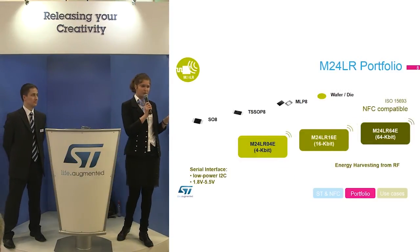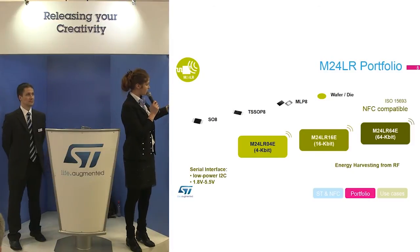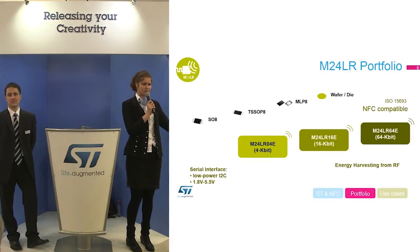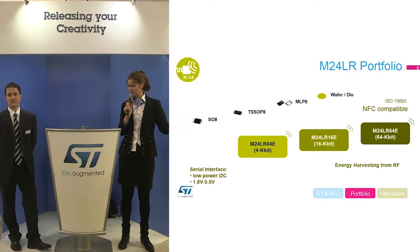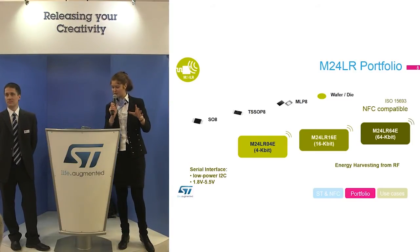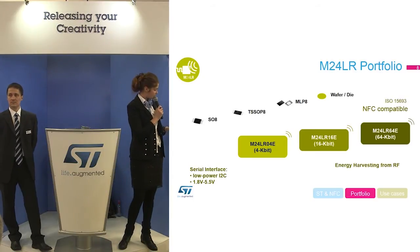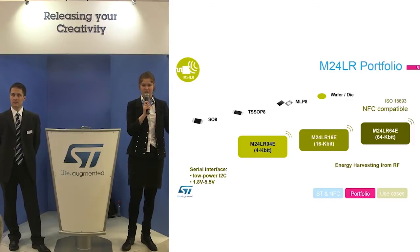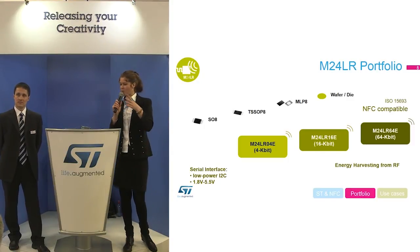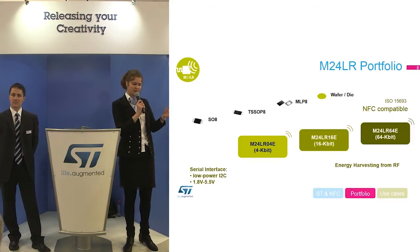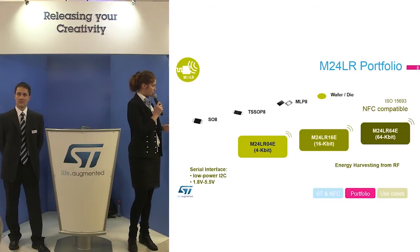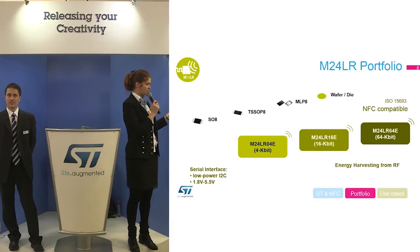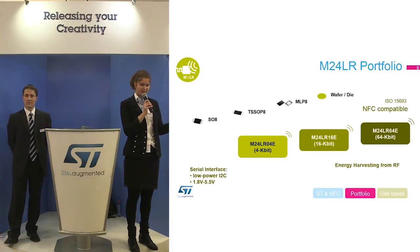Concerning the M24LR, we have the same package options: SO8, CSSOP, MLP, and wafers. There are three memory sizes: 4, 16, and 64 kilobits. A specific function here is the RF-free busy pin that allows signaling the microcontroller to wake up or to indicate an RF communication is occurring. This ability to wake the micro helps save battery lifetime.